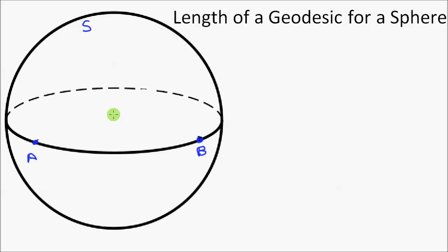We have a sphere S, with centre and radius R. We have two points A and B on the surface of the sphere, and we want to establish what the length of this arc is. A and B are also on a great circle — a circle whose centre corresponds to the centre of the sphere and whose radius equals the radius of the sphere, so the circumference lies on the surface of the sphere. We want to establish what the length from A to B is.